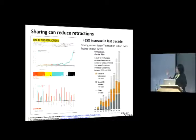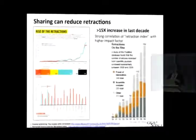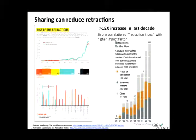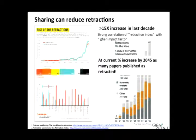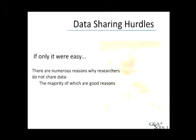Sharing can also reduce retractions. Some of these retractions occur because people do not have access to data prior to publication — reviewers do need to see data. If there's a problem with a paper, it's important that data be completely available so people can quickly assess and address it. According to the current graph, in 2045 as many papers will be published as retracted. Now, the issue with data sharing is, of course, the hurdles. If only it were easy. There are so many reasons why researchers do not share data, and the majority of these are actually good reasons.